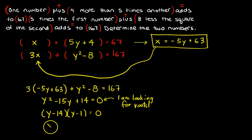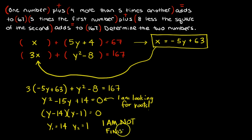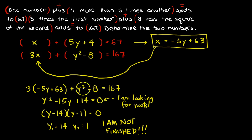So Y₁ = 14 and Y₂ = 1. But I am not finished — you are looking for two numbers, and the two numbers aren't simply 14 and 1. These are two different second numbers — the Y values. Each of these Y's has an X that goes with it, and I've got to plug them in.